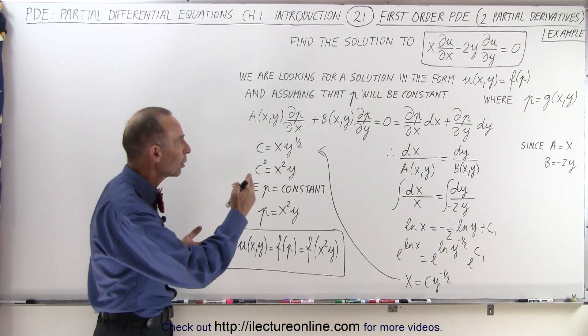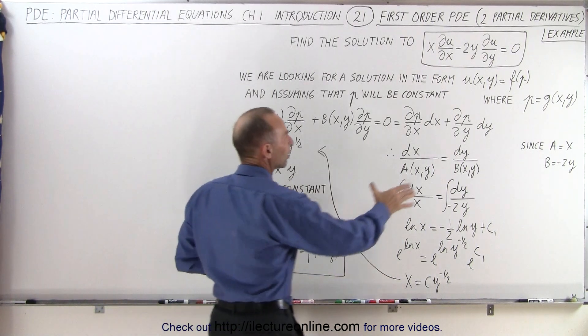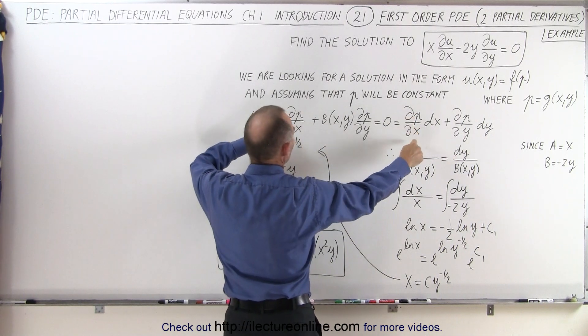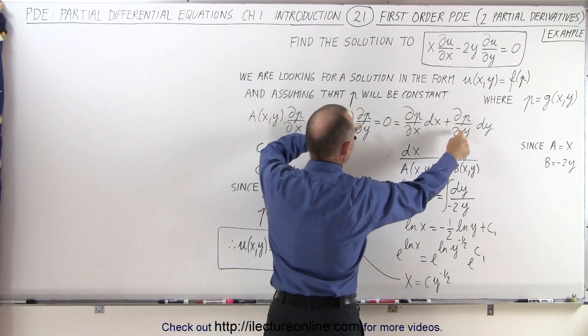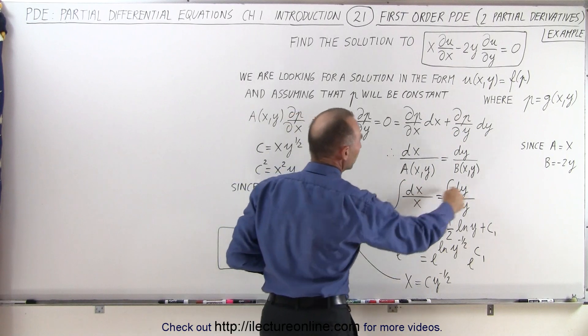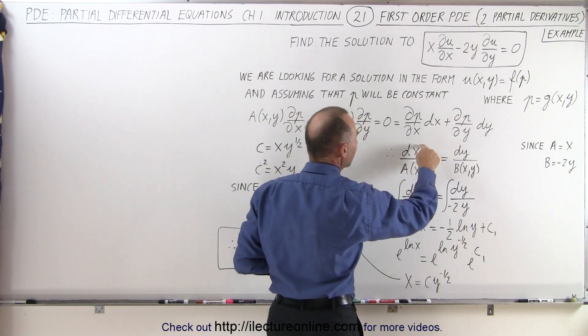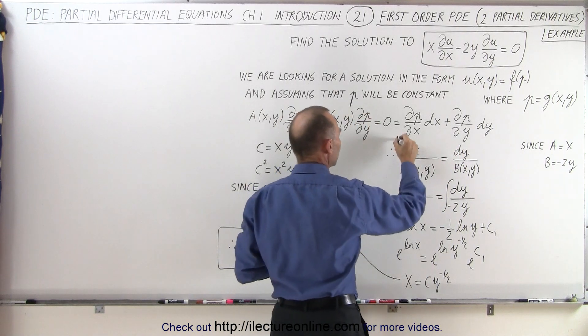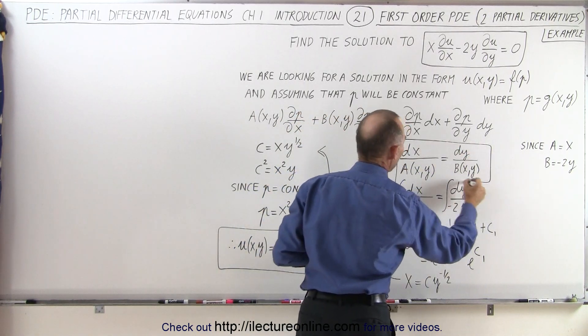Then we divided the one equation by the other. We divided the right equation by the left equation such that the partial of p with respect to x and the partial of p with respect to y would drop out and we end up with an equation that said that dx divided by a equals dy divided by b. And so that's the equation we end up with on the last video.